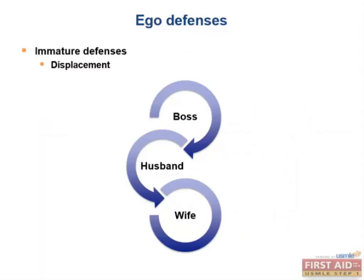Next we have displacement. Displacement can be thought of as displacing stress on oneself onto another person or object that is unrelated to the stress. Think of the example of a guy who's really angry at his boss but chooses to be mean to his wife instead, because it's more acceptable in his mind to displace his anger onto her. On the exam, you might be presented with answer choices that include displacement and something similar like acting out. The presence of stress transfer is what makes displacement a better answer choice.